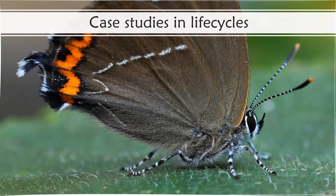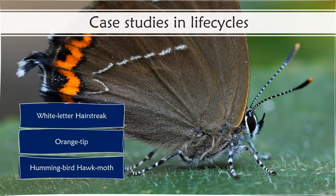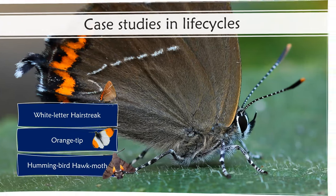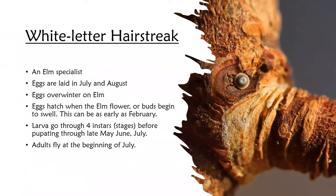Now for the more in-depth section looking at just three species: white letter hairstreak, orange tip, and hummingbird hawk moth. I have learned since 2017 that I can look for all stages of the white letter hairstreak all year round — eggs through winter, larvae through early spring, pupae through mid-summer, and adults through July and into August, then back to eggs and so on. The butterfly is an elm specialist, so elm is where you are going to find evidence of all the life stages.